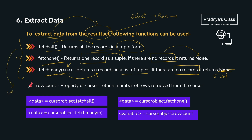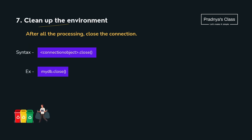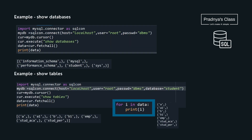All these functions work on the cursor object. There is also one property associated with the cursor object: rowcount, which counts the number of rows retrieved. Note that rowcount is a property, so there are no brackets. The final step is closing the connection — just like we do with files, we use the close() function, and it works with the connection object.